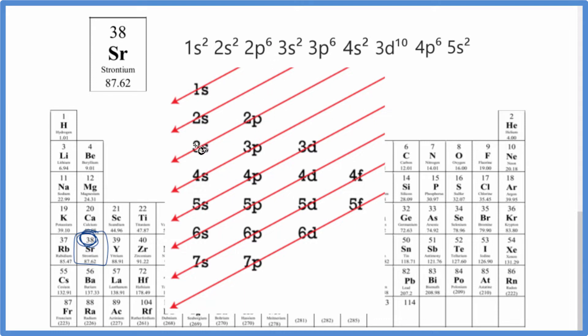2p6, 3s2, 3p, again p holds up to 6, that's full. 4s2, then we go to 3d10 here, d holds up to 10. 4p6, and then 5s2.